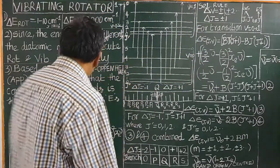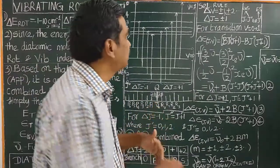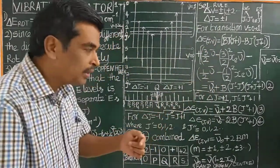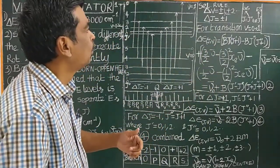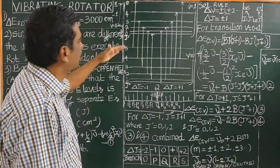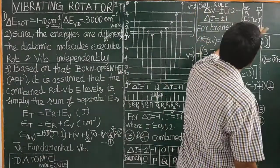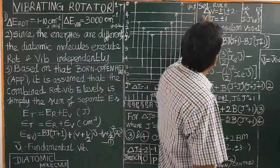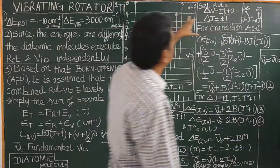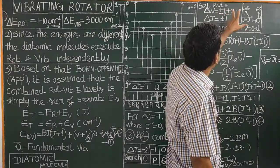The transition — what is called the transition — is delta E equals E2 minus E1. For the selection rules for transition: the selection rule for vibrational spectrum is delta v equals plus or minus 1, plus or minus 2, etc.